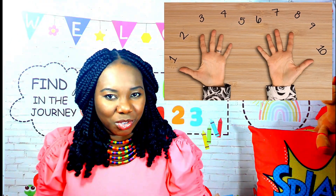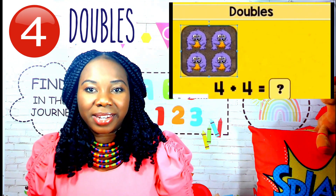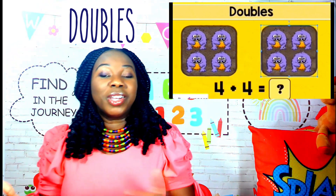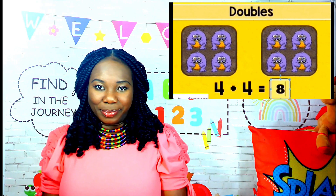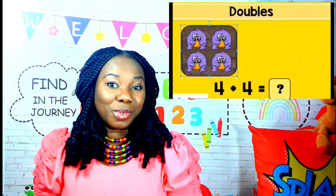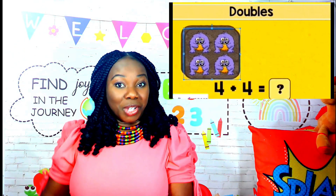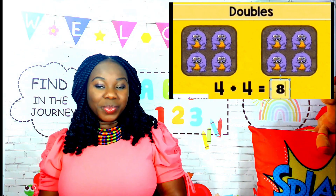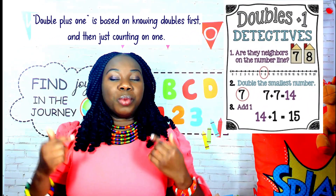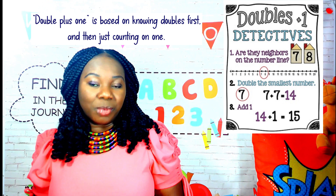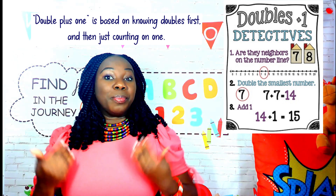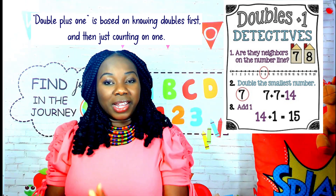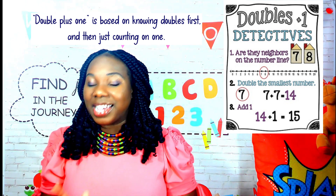Addition strategy number four: the doubles strategy. This is when you add or subtract from a doubles fact you know in order to solve another problem. For example, we can use the doubles strategy to help with the doubles plus one strategy. If we know that seven plus seven is 14, when we come across seven plus eight, we can rely on our prior knowledge of seven plus seven and add one more to figure out that seven plus eight equals 15.